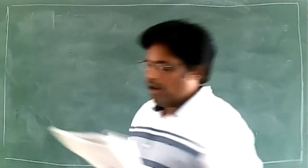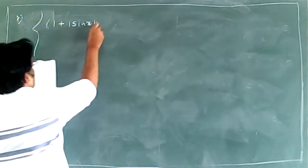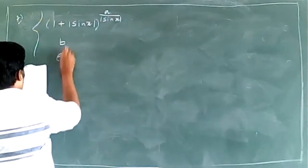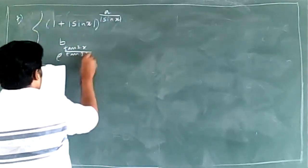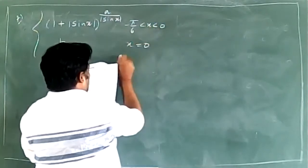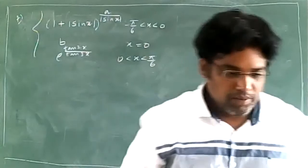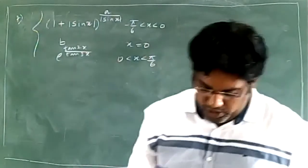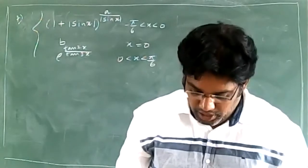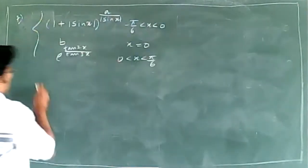Coming to question number 7: you have 1 plus modulus of sin x to the power of a divided by modulus of sin x, and another piece for x equals 0 as value b, and e to the power of tan 2x over tan x for x greater than 0. It is continuous at x equals 0, and there are two unknowns a and b — so I need to find LHL and RHL.